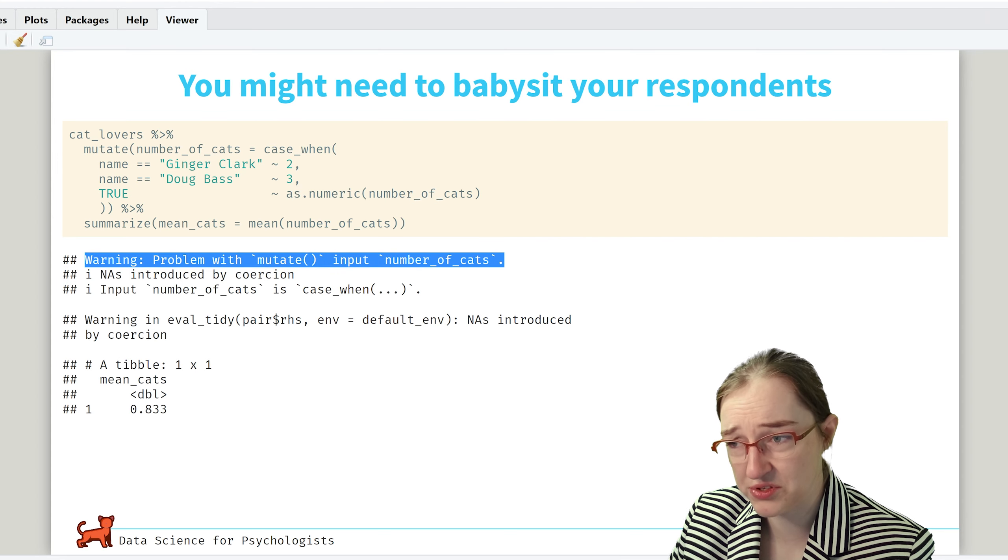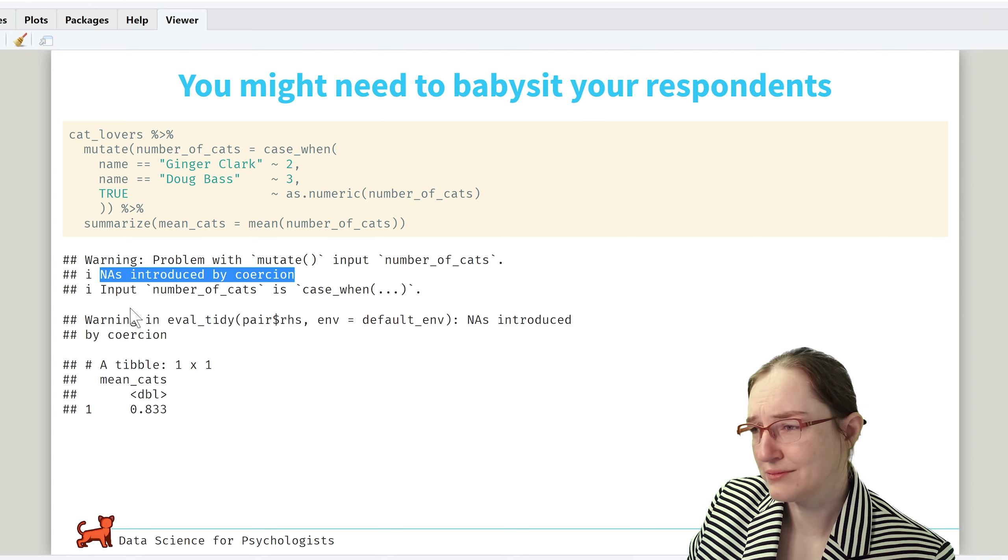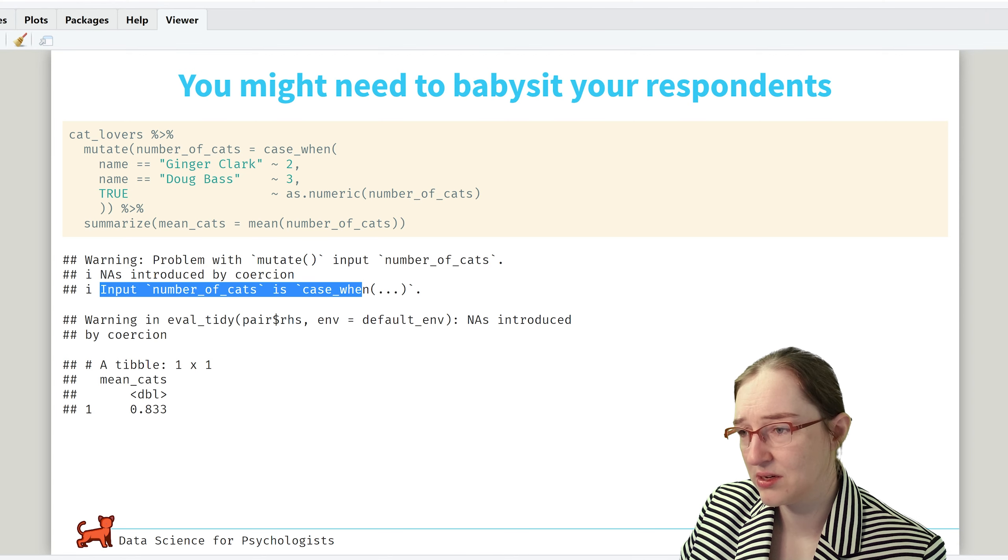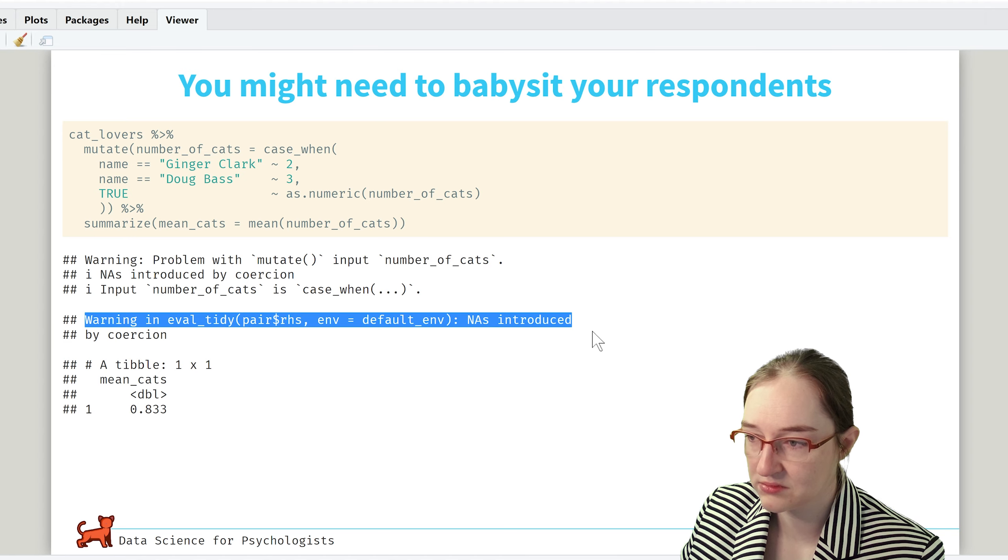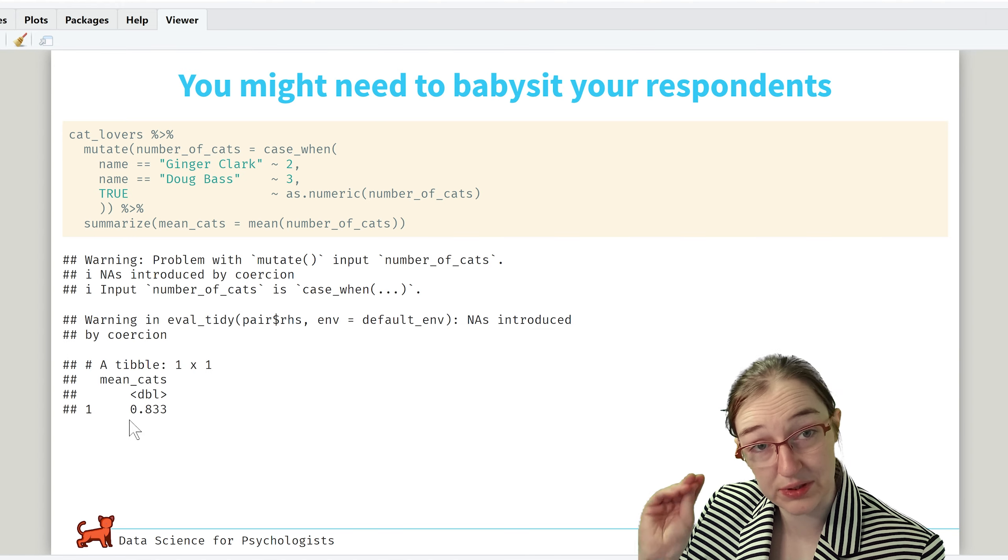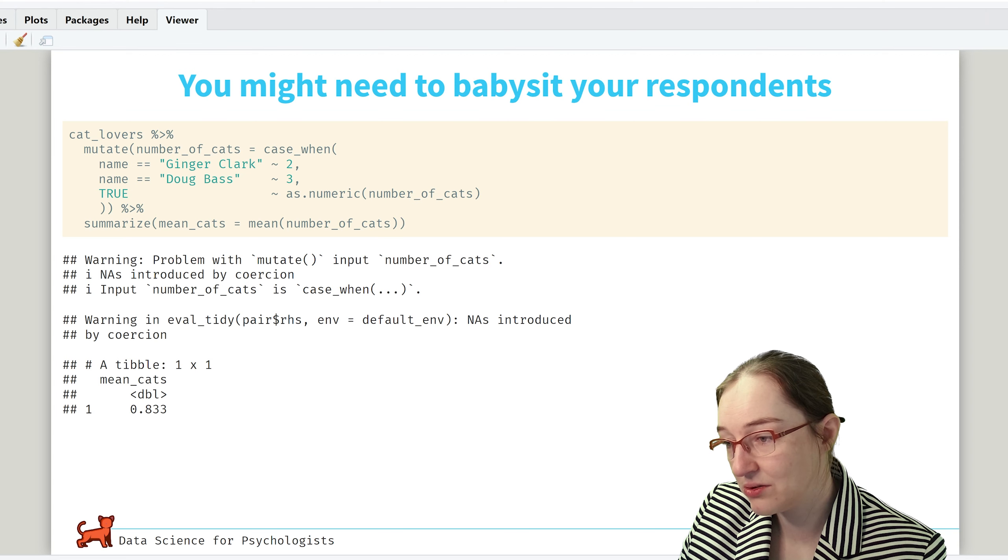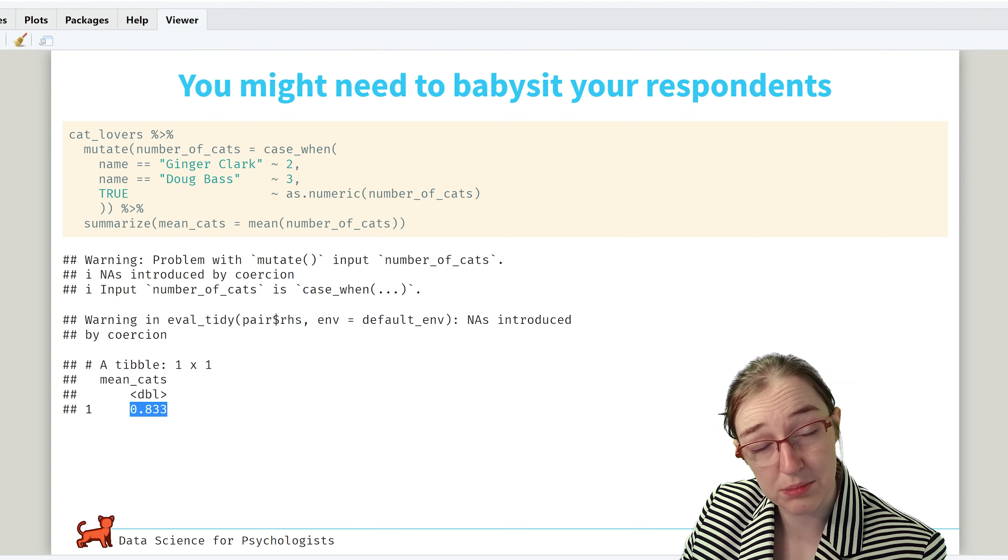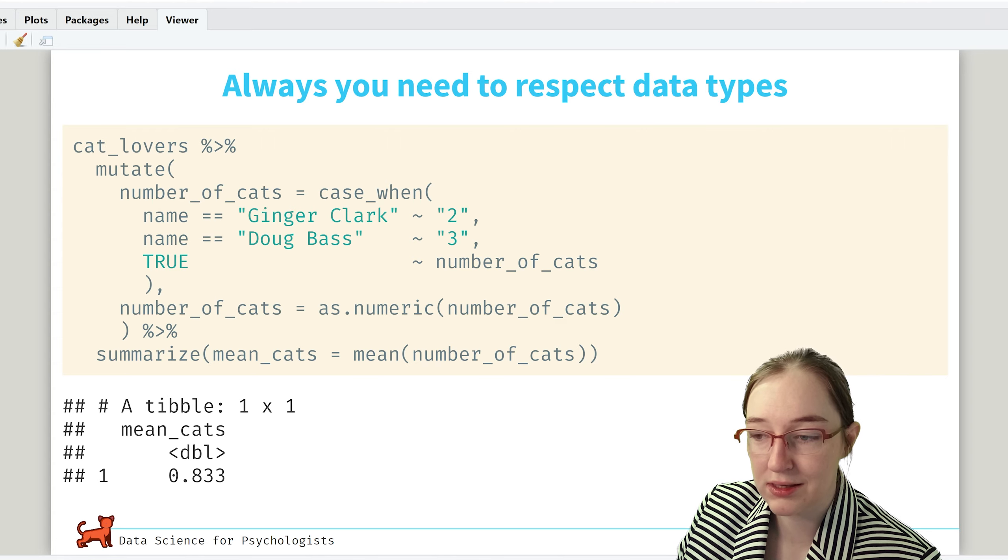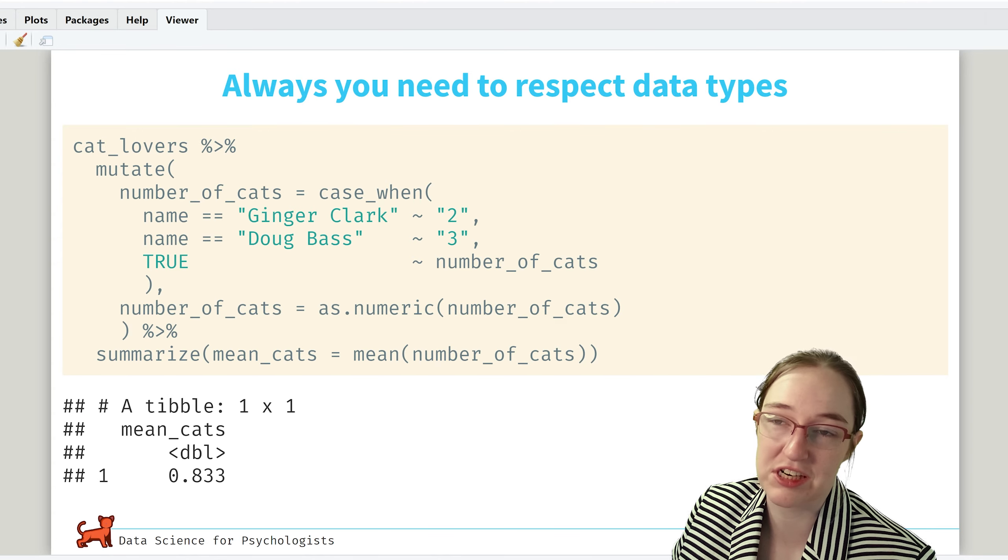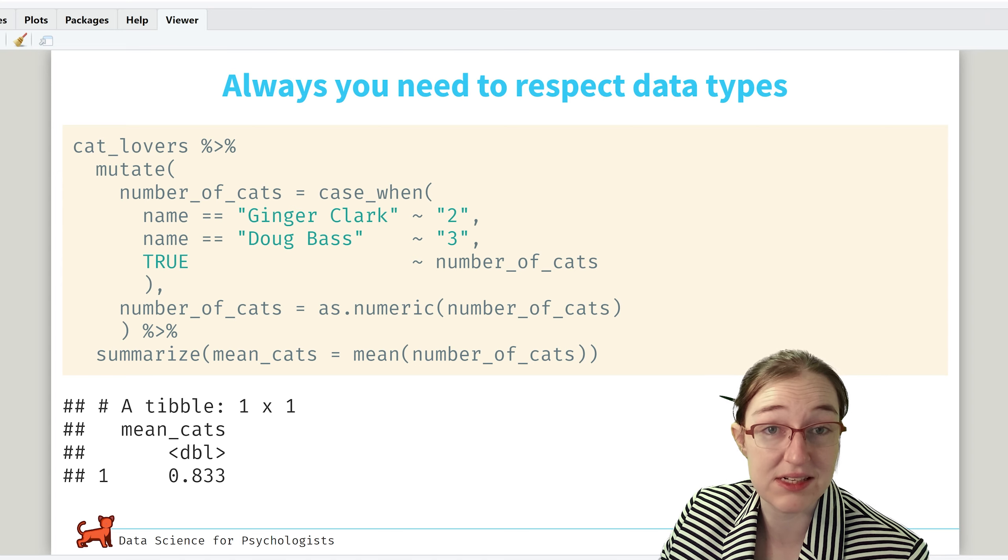Cool. Warning, problem with mutation. NAs introduced by coercion. Input number of cats, case_when. So it fixes that up, and more warnings, and gives us a table. So it gives us what we want with lots of warnings, scolding us. But we got our results. So mean number of cats is 8.3. Cool. Yeah, that is a journey in data. Now, just as a general rule, you need to be respectful of data type is what I'm saying.